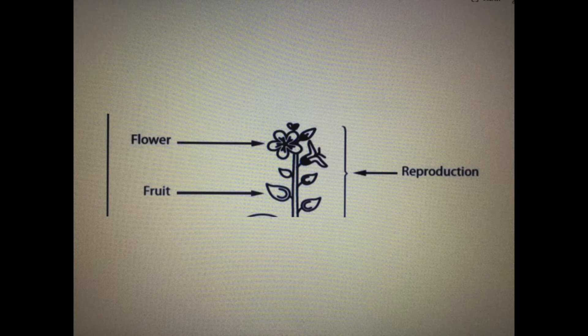The fruit and seed form after the plant has been pollinated. The seeds then produce new plants.